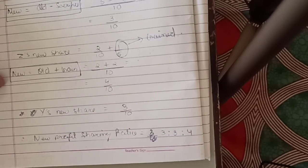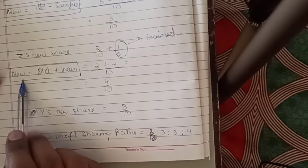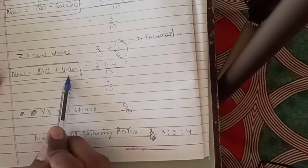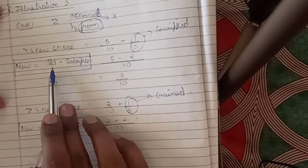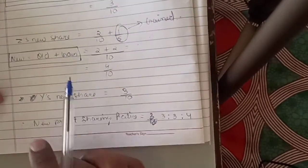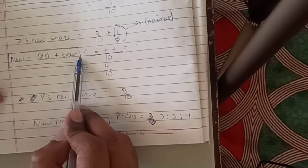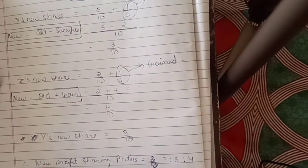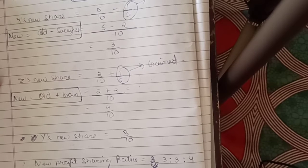If you want to do it formula-wise, the formula is: new share = old share plus gain. For sacrifice: old minus sacrifice. For gaining: old plus gain. I suggest you don't go formula-wise because there can be a lot of confusion with plus and minus. Just go conceptually.